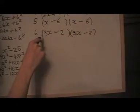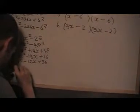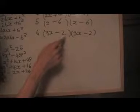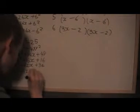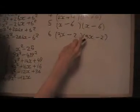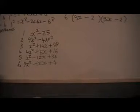For example 6, I square the first term: 3x times 3x is 9x squared. Then I have minus 2 times 3x, which is 6x, and 2 lots of that gives minus 12x for the middle term. Then I square the last term: minus 2 times minus 2 is plus 4. So the answer is 9x squared minus 12x plus 4.